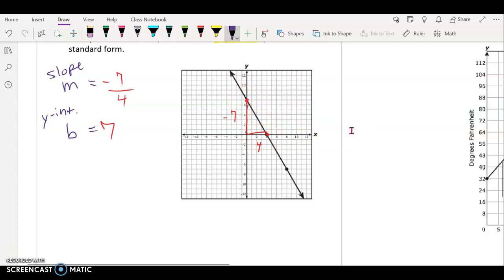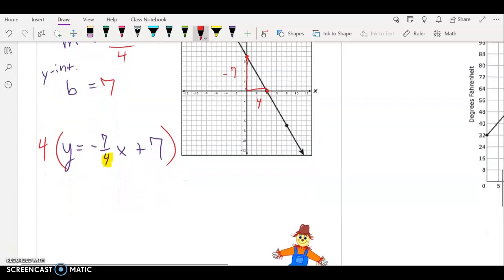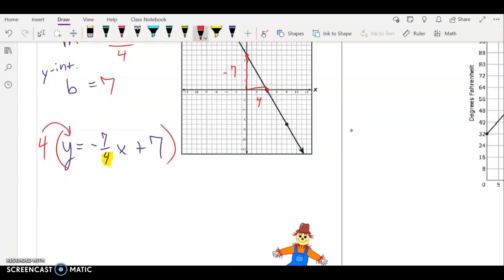All right, so now we're going to take that equation. I'm going to write it down again up here: y equals negative seven fourths x plus seven. And we are going to convert it to standard form. If you need to go back to look at the front of your notes to see what the steps are, you can. The first step is to get rid of the fractions, so we multiply both sides by the denominator of your fraction. Multiplying both sides by four.